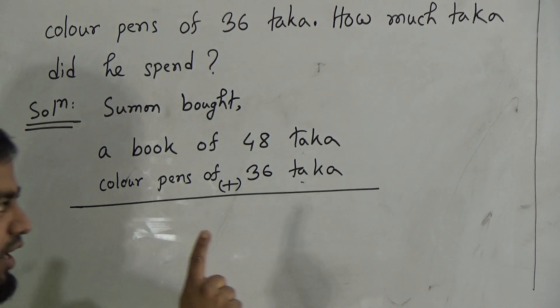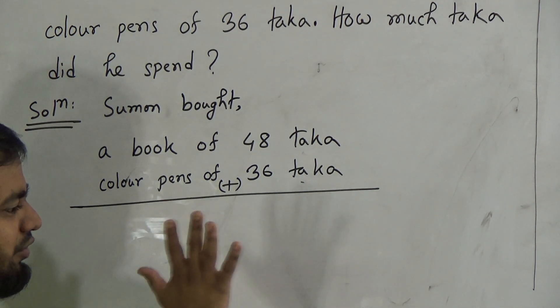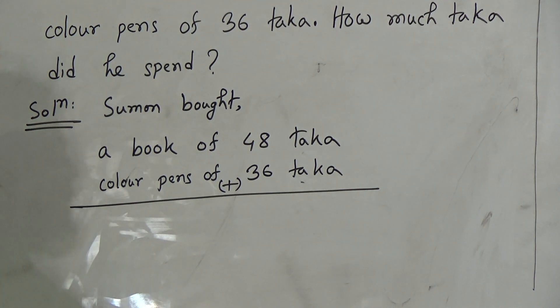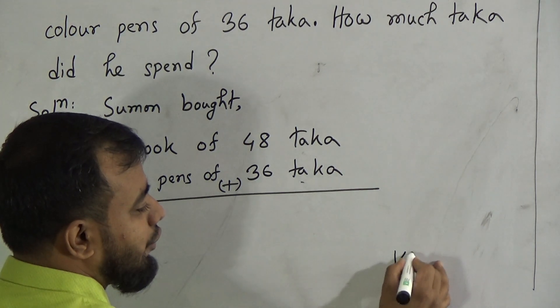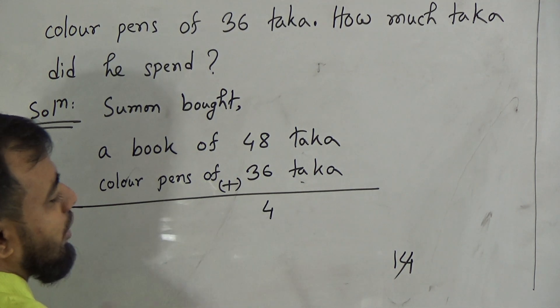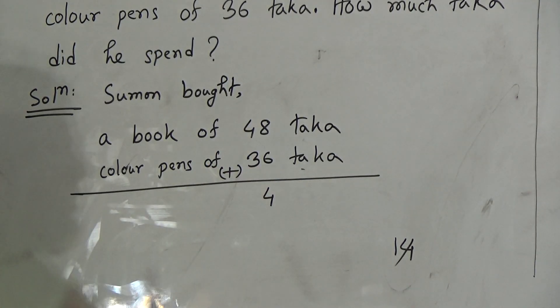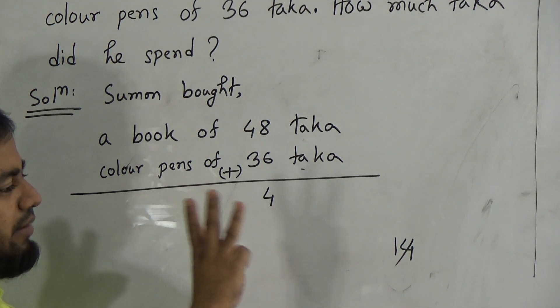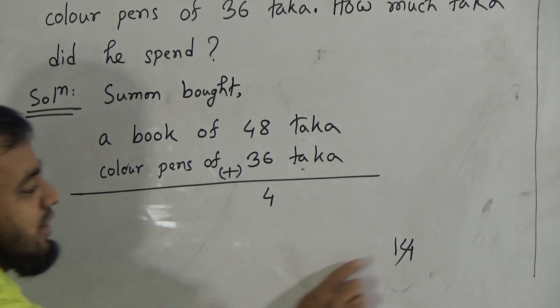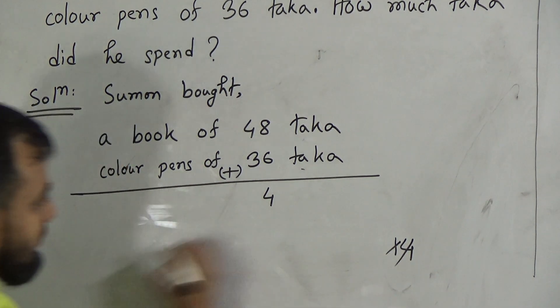If we add 8 with 6, we will get 8, 9, 10, 11, 12, 13, 14. So, 6 and 8 makes 14. 4 will be there and 1 will be in our hand. Now, 4 and 3, 4 and 3 makes how much? 4, 5, 6, 7, it is 7. 4 and 3 makes 7, 7 and 1 makes 8.